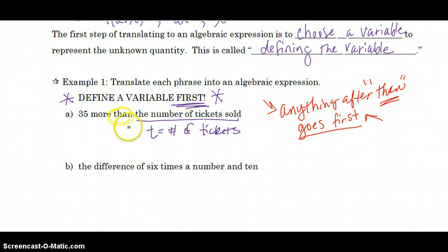Okay, so what came after than? The number of tickets, which is T. So it's going to go first. And it's 35 more, so more would be our keyword to tell us to add. So notice I put 35 last, because it was before then. So anything that comes after then goes first.